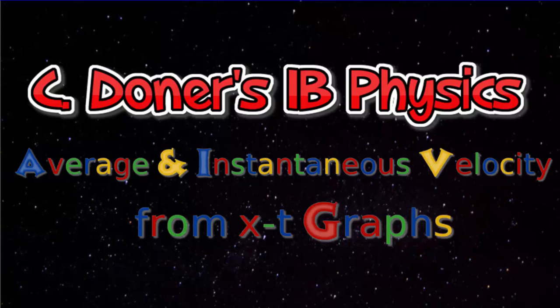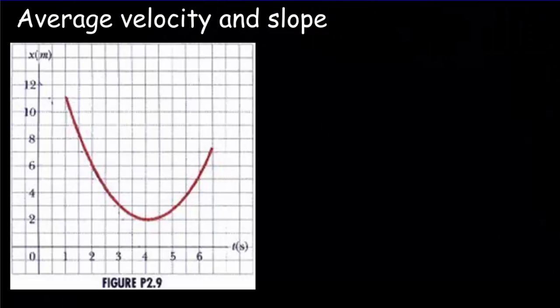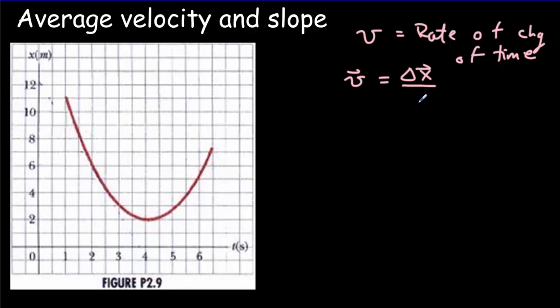Today we're going to look at how to calculate average and instantaneous velocity from position-time graphs. Not so long ago we defined velocity as equal to the rate of change of time. And we wrote that as an equation, we said that that would equal the displacement or change in position divided by the time interval.